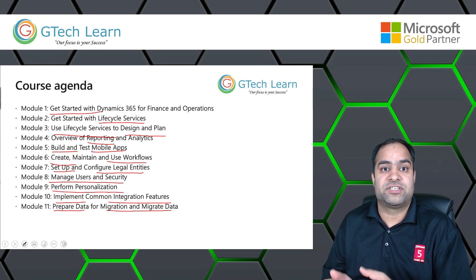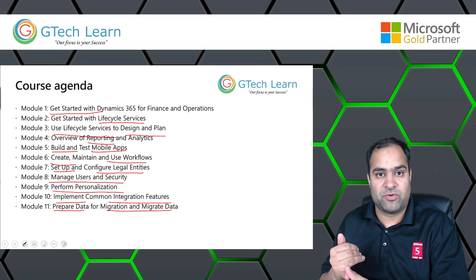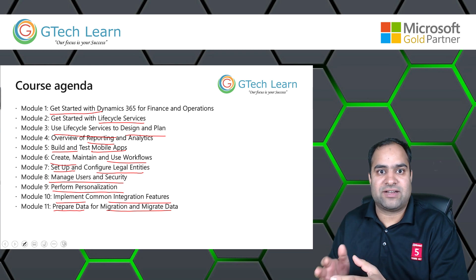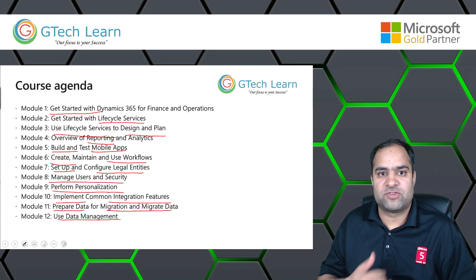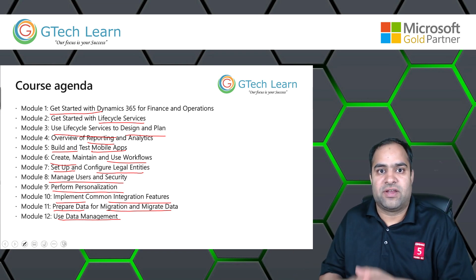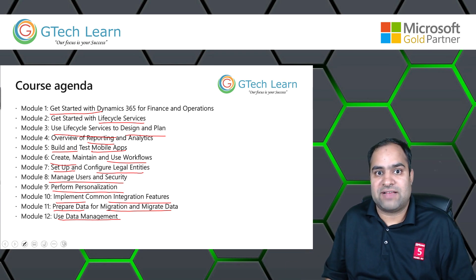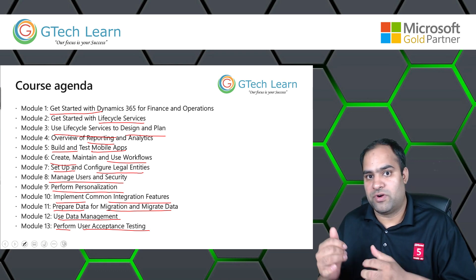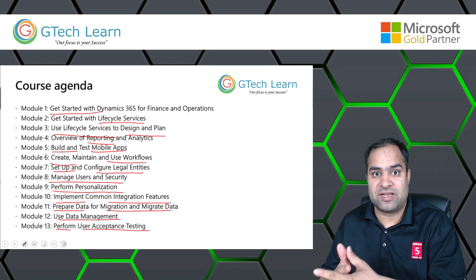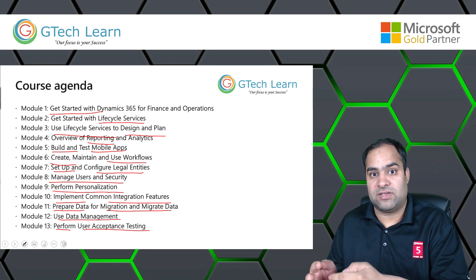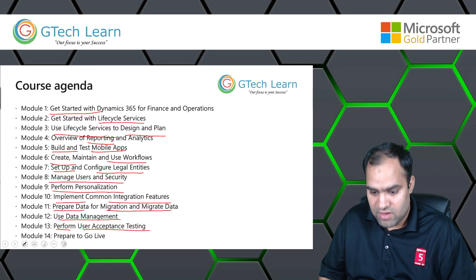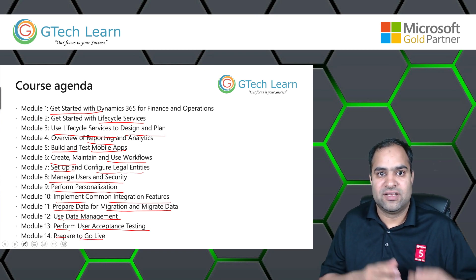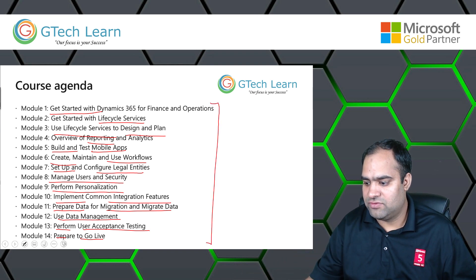For data migration, we'll discuss strategy — whether to import full transactional data or only opening/closing balances and open transactions. The Data Management workspace helps create import and export projects, handling data from different sources and moving it through staging to production tables. Module twelve covers performing UAT (User Acceptance Testing), configuring UAT tools, and completing the UAT checklist before requesting a production system from Microsoft. Module fourteen, the final module on day three, covers preparing to go live — best practices from the very beginning through go-live.